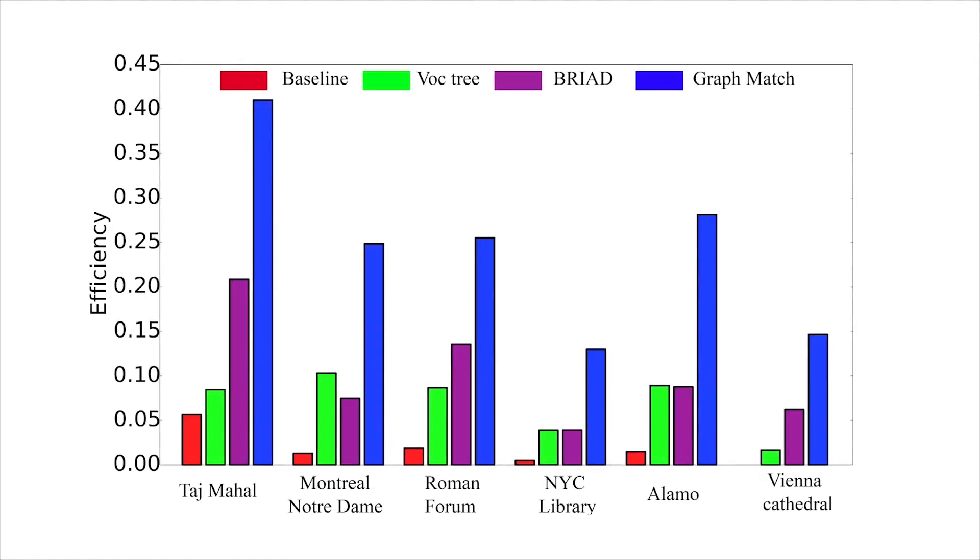We can see the improvement in efficiency when we compare three methods against the proposed graph match approach for various scenes. Here, efficiency is measured by dividing the number of valid edges found by the total number of edges tested, which dominates the time for constructing the graph. We can see that our algorithm is more than twice as efficient as the state-of-the-art approach of Building Rome in a Day.